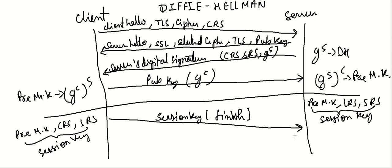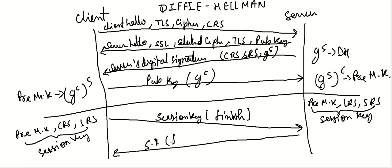The server will receive it and decrypt it using the session key, then send an acknowledgement by encrypting it with the session key. The client will finally decrypt it using the session key and the whole handshake is complete. They can now further exchange data using the session key. This is how the Diffie-Hellman algorithm works and the SSL handshake takes place.